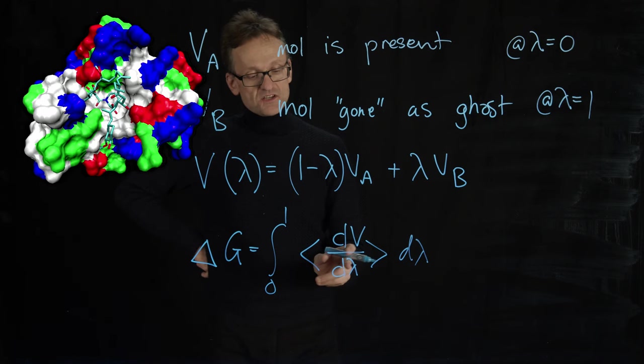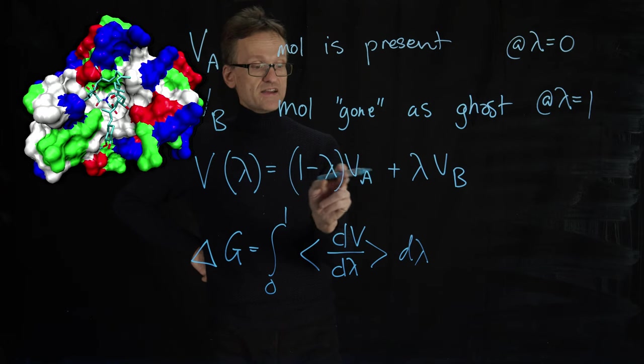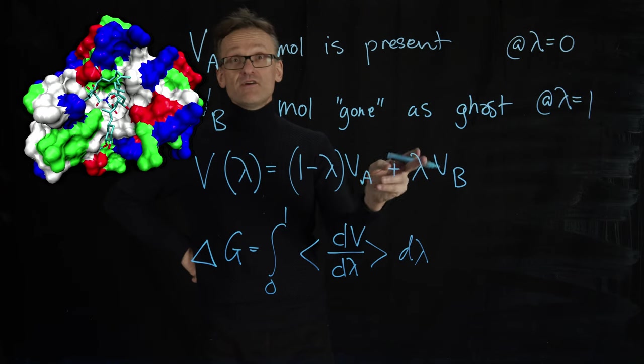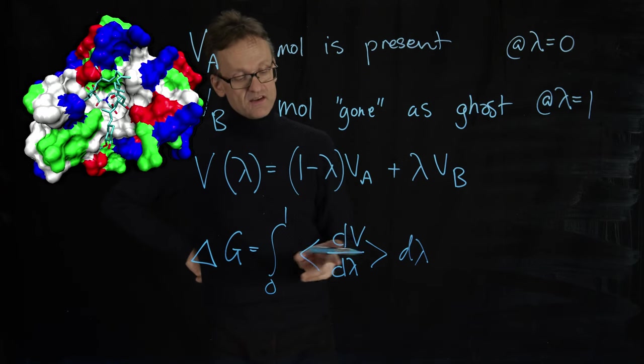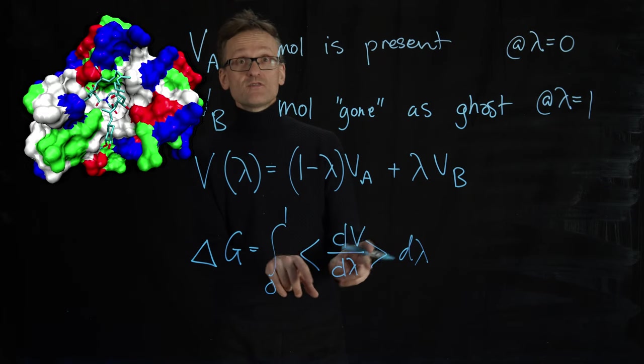There are two parts here. I don't calculate this numerically. This derivative of linear interpolation is minus VA plus VB. Very easy dependence on lambda. So I can calculate this analytically and then this is an average over the ensemble, right? That's why I need a simulation.